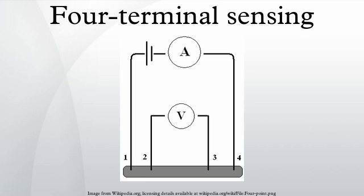Four-terminal sensing, four-wire sensing, or four-point probes method is an electrical impedance measuring technique that uses separate pairs of current-carrying and voltage-sensing electrodes to make more accurate measurements than the simpler and more usual two-terminal sensing.